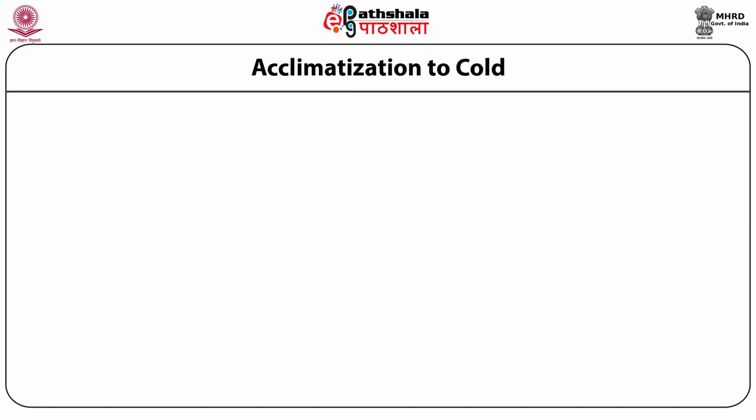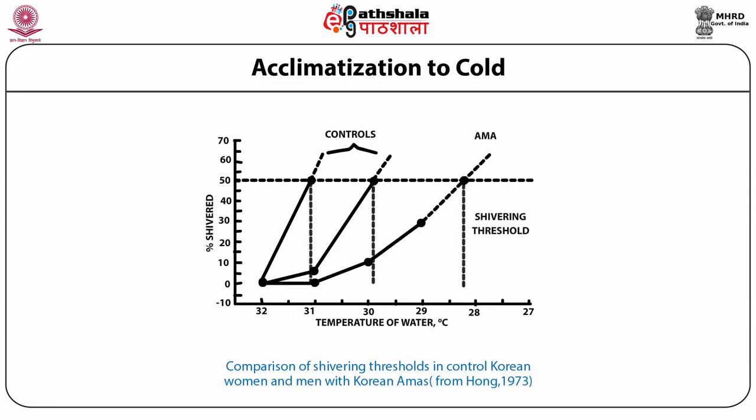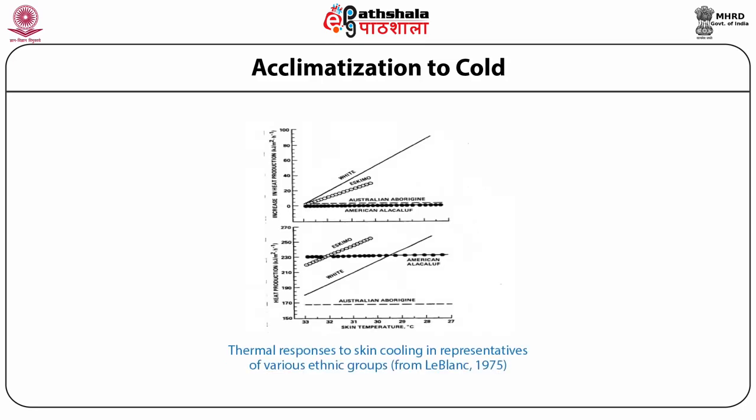Fat is perhaps more important than protein in exerting an adaptive response to cold. This insulative adaptation can be directly related to channel swimmers. Inhabitants of the Arctic region consume large quantities of fat to keep their bodies warm. In conditions of severe exposure, increased heat production reduces the fall of rectal temperature, allowing skin temperature to rise and bringing comfort to the individual under cold stress.